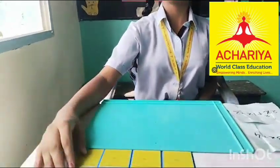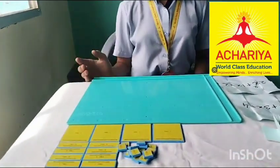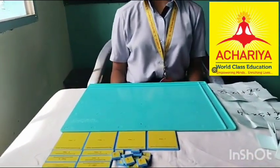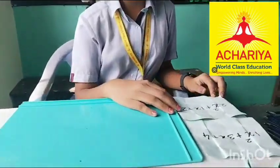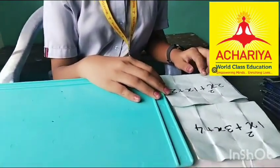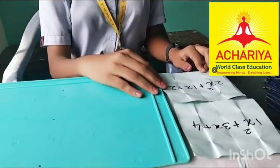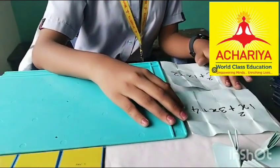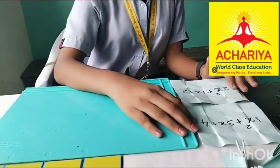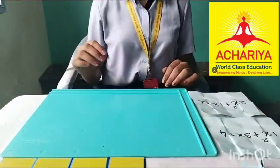This is called algebraic mode and this is called algebraic tiles. Now I am going to add these expressions. My first question is 2x squared plus 1x plus 2, and my second question is 1x squared plus 3x plus 4.